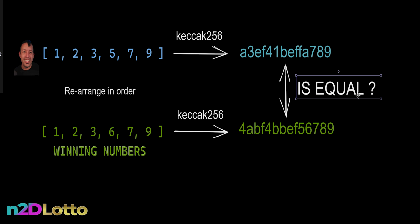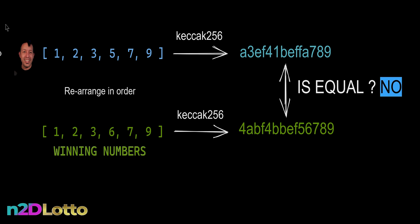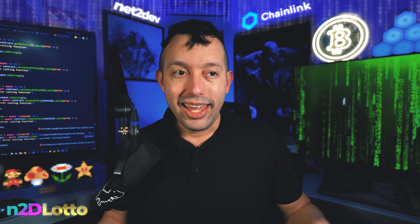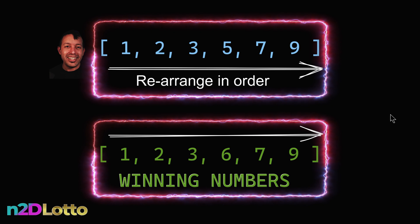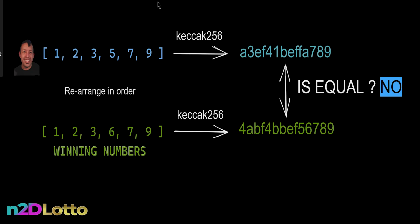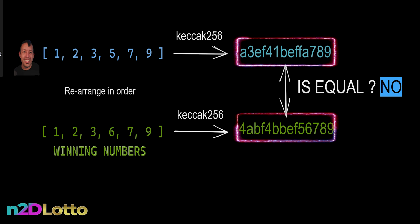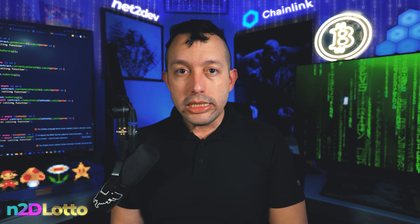Why did I rearrange them in order? Because even if a user has all the winning numbers but they're not in the same order, the keccak256 hash will not match. The hash value changes with different ordering — even if the same numbers are present. So I must first sort those numbers in order, then hash them using keccak256, which produces a bytes32 hash. Then I compare the ticket number hash and the winning number hash. Mind-blowing, right? That way I don't have to check every single number in the ticket against every winning number.